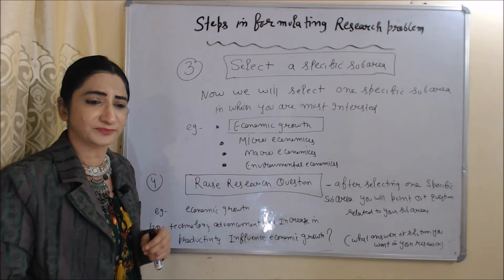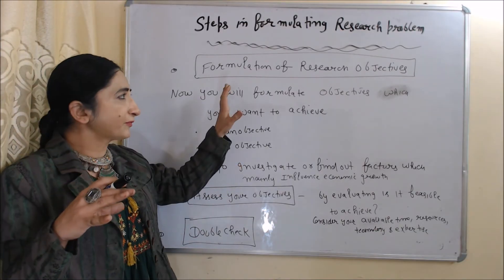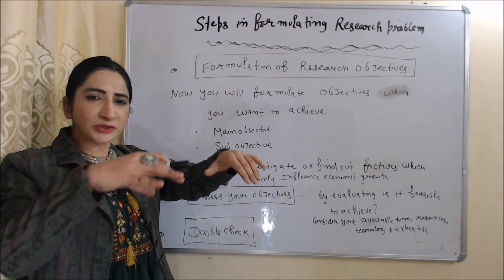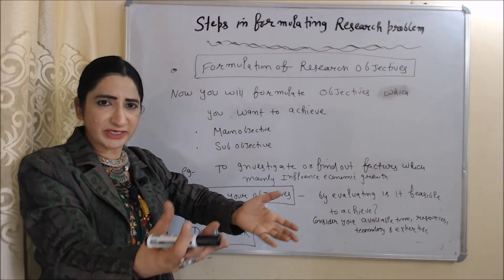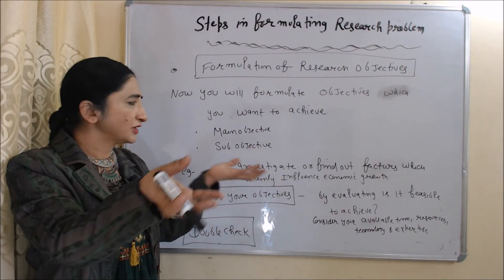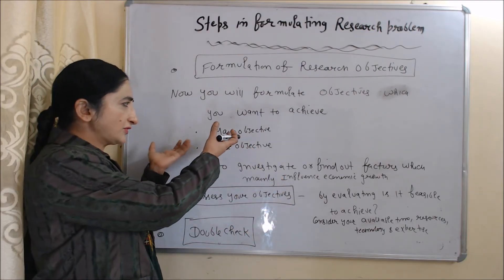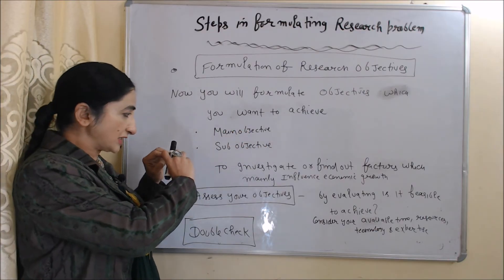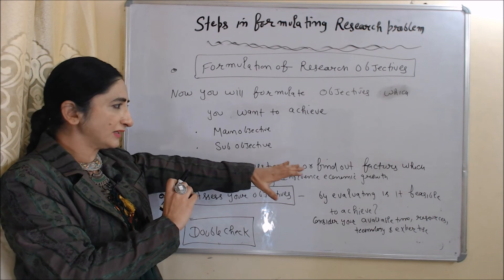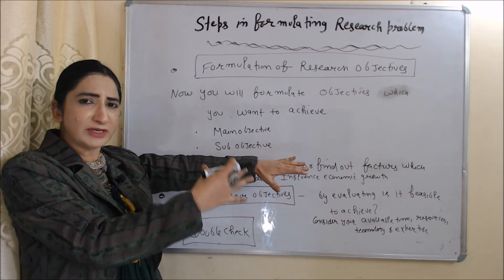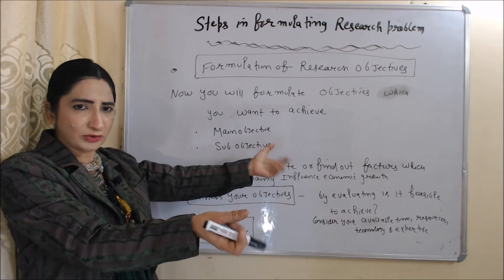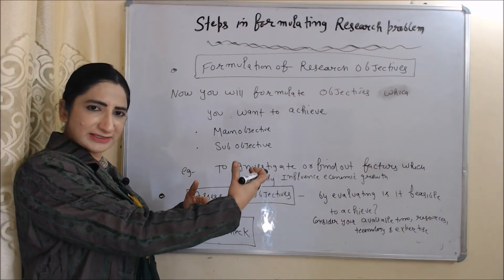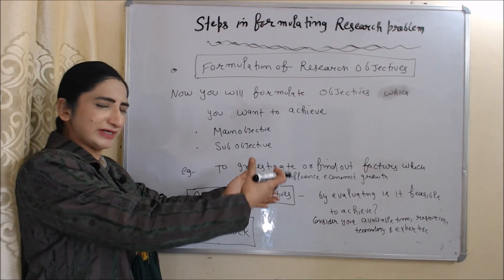The next step is the formulation of research objectives. Now you will formulate the objectives you want to achieve — a main objective and sub-objectives. For example, your objective is to investigate or find out the factors which mainly influence economic growth. The next step is to assess your objective by evaluating whether it is feasible to achieve, considering your available time, resources, technology, and expertise.